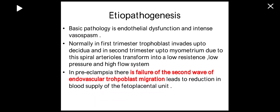Normally in the first trimester, trophoblast invades up to the decidua, and in the second trimester up to the myometrium, as the spiral arteries transform into a low-resistance, low-pressure, high-flow system. In preeclampsia there is failure of the second wave of endotrophoblastic migration, leading to reduction in supply to the fetoplacental unit.